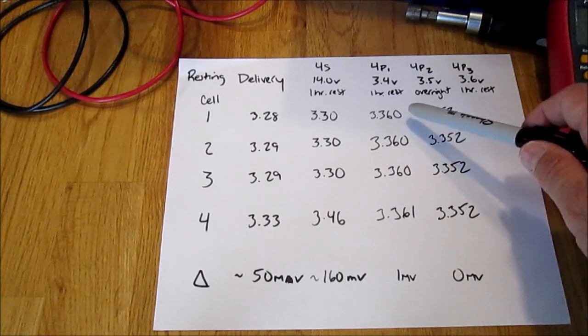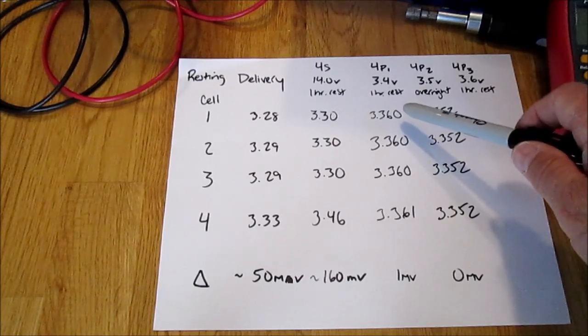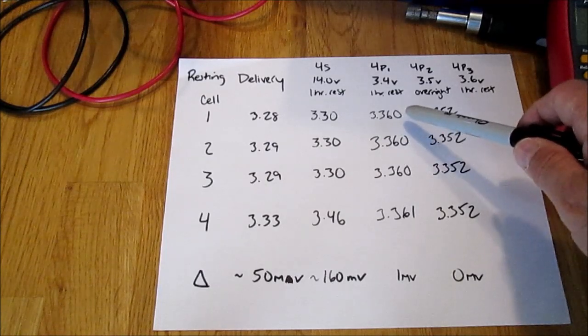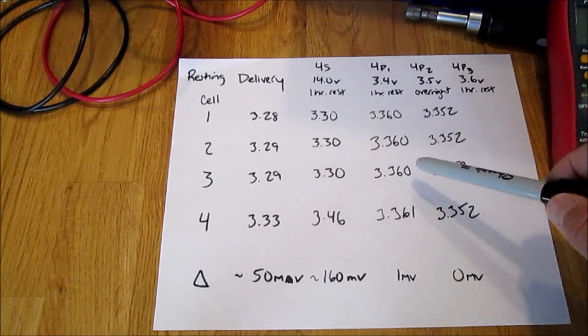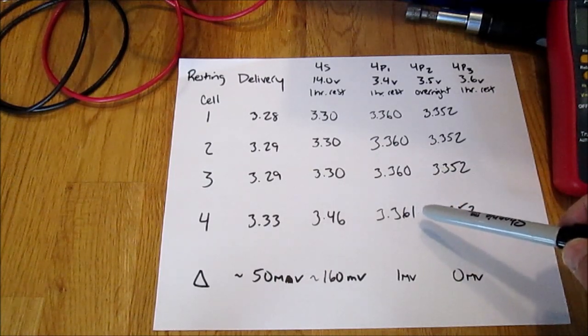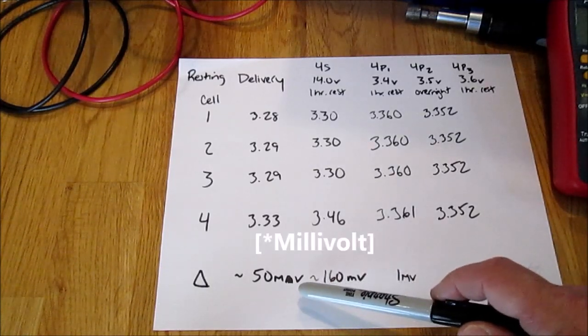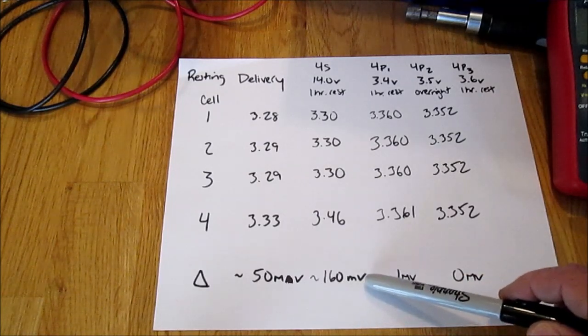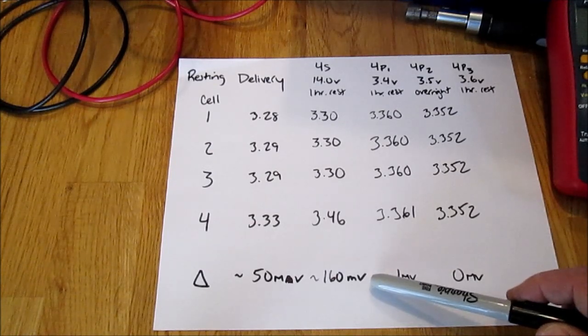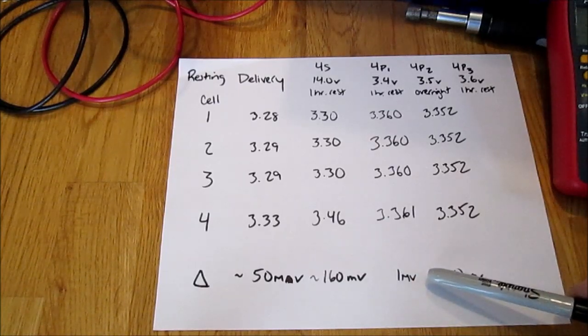Clearly cell number four was well above the other three in state of charge at 3.46 volts. So the battery was disassembled from series, reassembled in parallel for the first charge cycle at 3.4 volts. I took these voltages after one hour rest after many days and I believe it took upwards of five and three-quarters days.